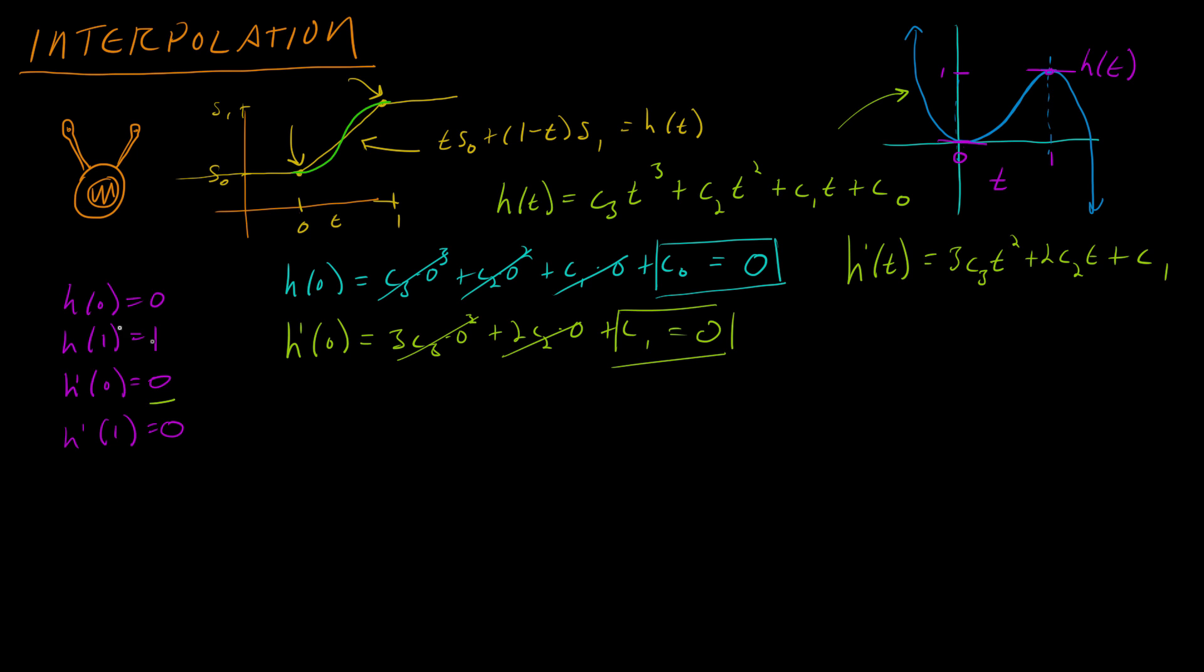So now let's do this same thing for h of 1. We're going to substitute in here c3 times 1 cubed plus c2 times 1 squared, and then we know that c1 and c0 are 0 so we just ignore them. We've decided that this should be equal to 1. And now we're going to do h prime of 1. This doesn't let us eliminate a coefficient immediately but that's fine. We do h prime of 1 and we use this formula, so we get 3 c3 times 1 squared plus 2 c2 times 1, and we've decided that should be equal to 0.